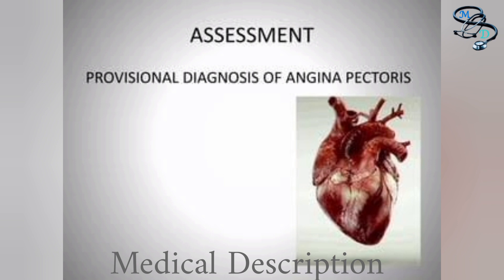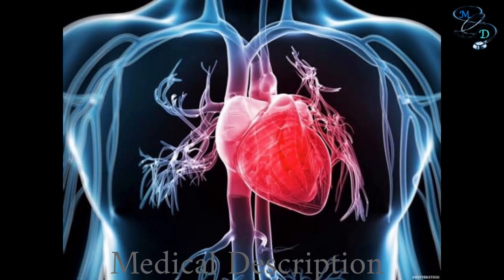The best treatment for angina depends on the type. If your angina is stable, you might be able to control it with lifestyle changes and medicines. Unstable angina requires immediate treatment in a hospital, involving medicines and surgical procedures. Medications for improving angina symptoms include aspirin and other antiplatelet medications, which reduce the ability of blood to clot, making it easier for blood to flow through narrowed heart arteries.